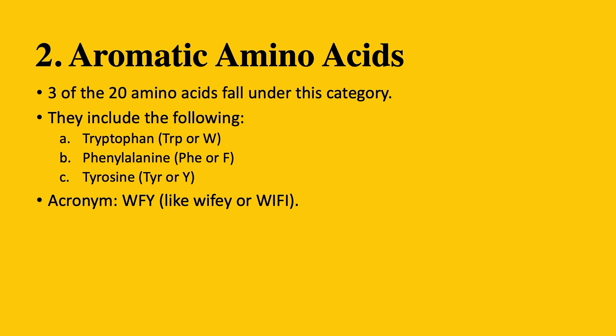So let's look at the structures of these three amino acids. These are easy to remember and identify because the amino acids in this group have a benzene ring. So once you see a benzene ring, all you have to do is differentiate between the three.